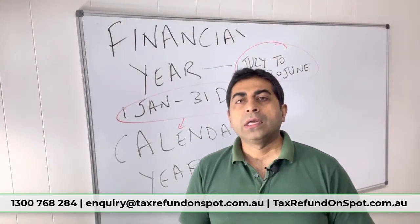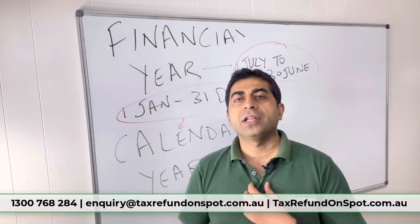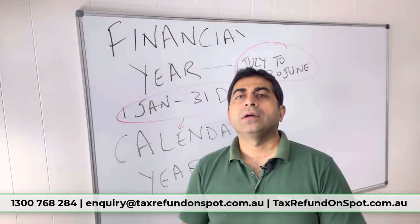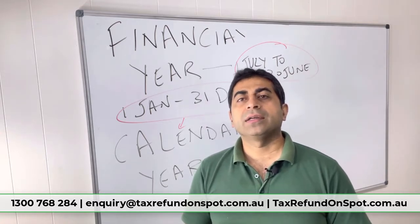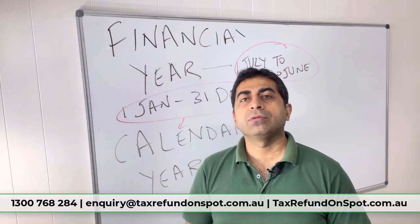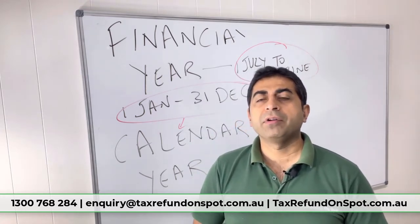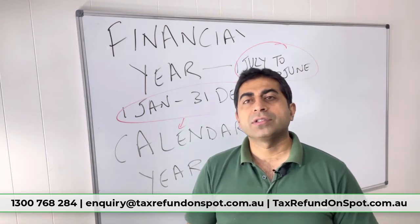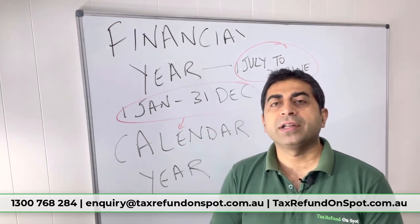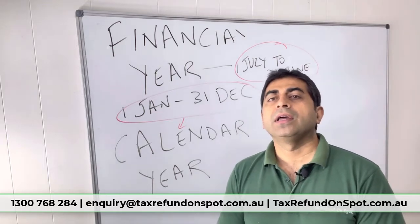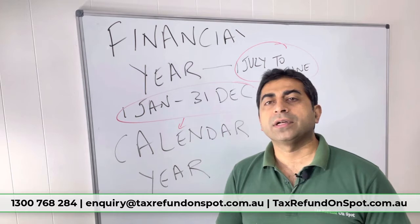The topic for today is financial year versus calendar year. A financial year in Australia is from the 1st of July to the 30th of June. A calendar year, used everywhere else, is from the 1st of January to the 31st of December.